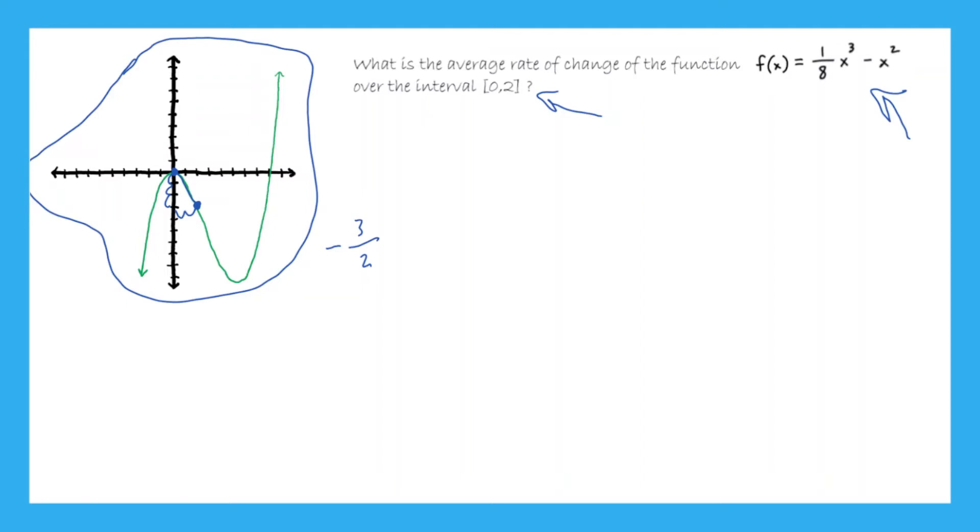However, what we need to learn to do today is to find out that answer, negative 3 over 2, without using a graph. So we're going to try to solve this problem as if we did not have this graph. So real quick, let's agree that y is equal to f(x).